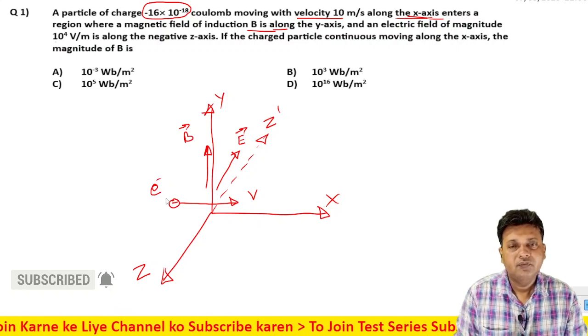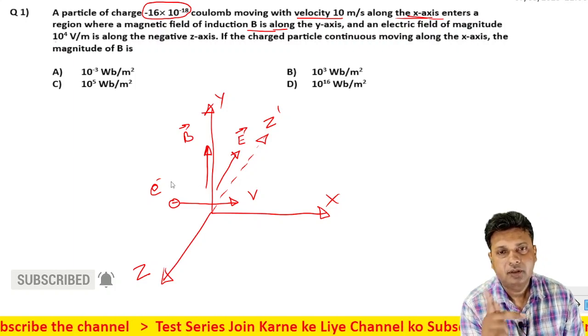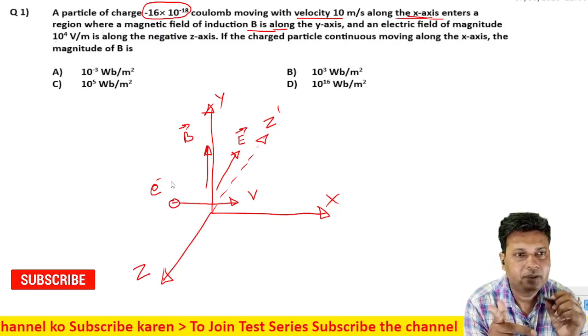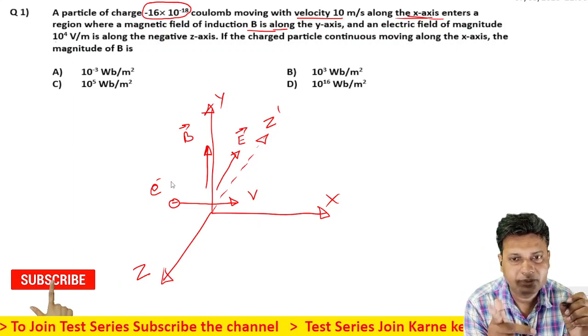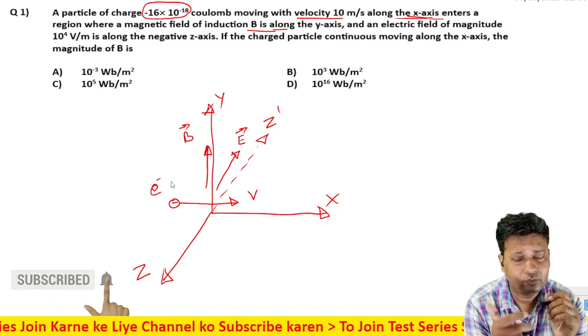Now, Fleming's left-hand rule says: four fingers represent the magnetic field direction, middle finger represents the charge particle motion direction, and thumb represents the magnetic force.